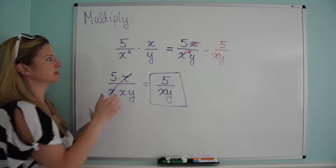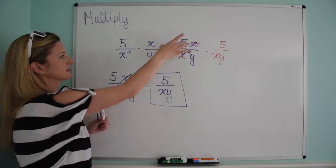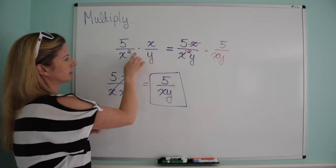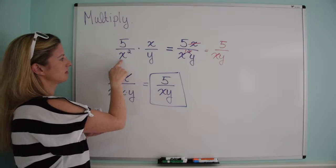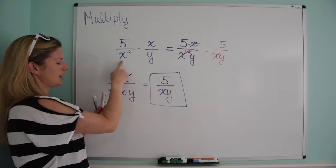Another option, which I think is good too, is simplify it before you even actually do the multiplication. So if you know this is multiplication, you can just say, well, I've got an x up here, two x's down here.